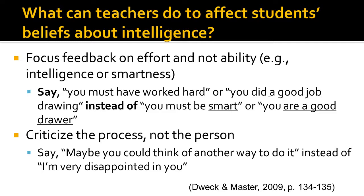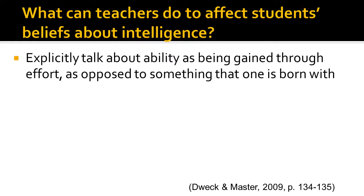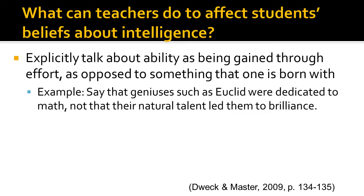So you might offer them other strategies they could use to study or learn the material. Another thing teachers can do is to explicitly talk about ability as being gained through effort, as opposed to something that one is born with. For example, at an appropriate time during the instruction, a teacher could say, 'Geniuses such as Euclid were dedicated to math,' not that their natural talent led them to brilliance. You can look up famous quotations, such as the one by Thomas Edison, where he said that 'Genius is 1% inspiration, 99% perspiration.' Quotes such as this convey the idea that even very famous people believe that their success was due to their great efforts.